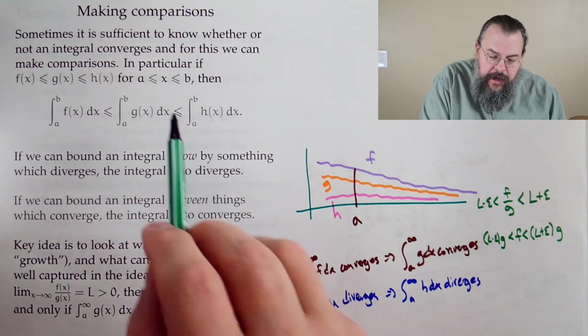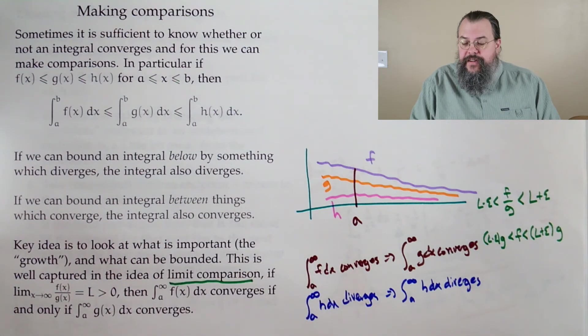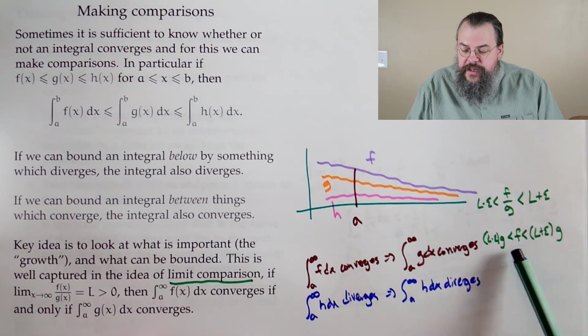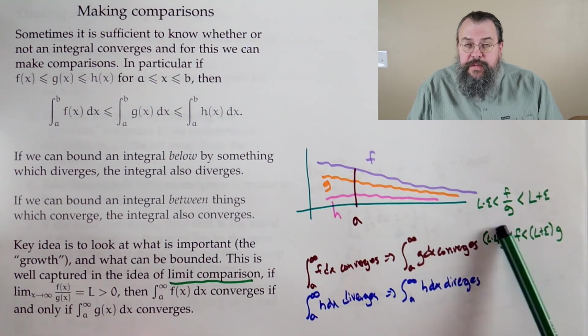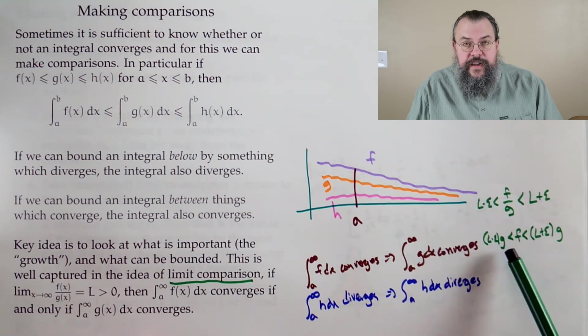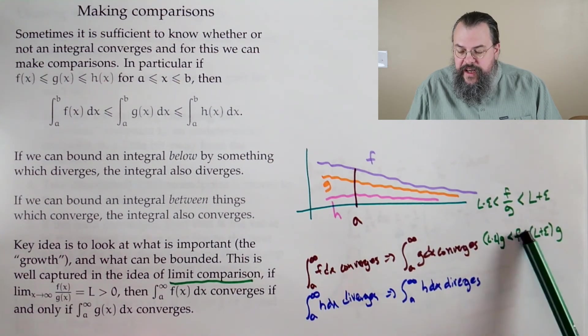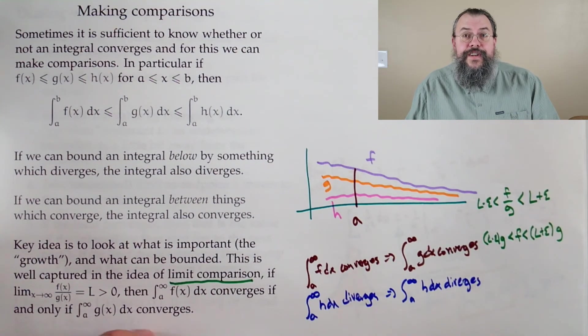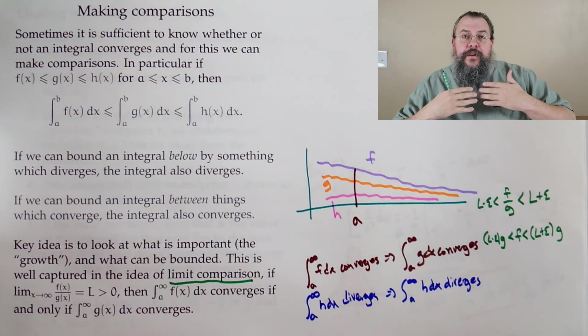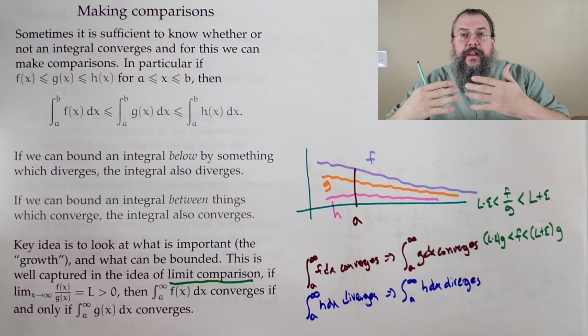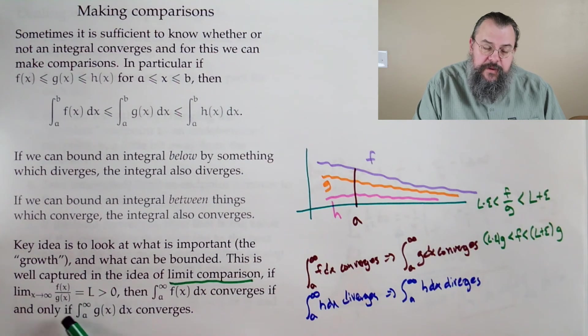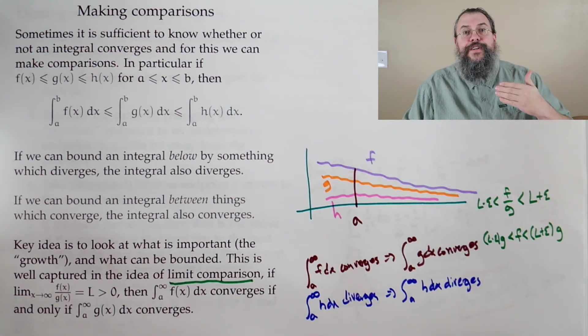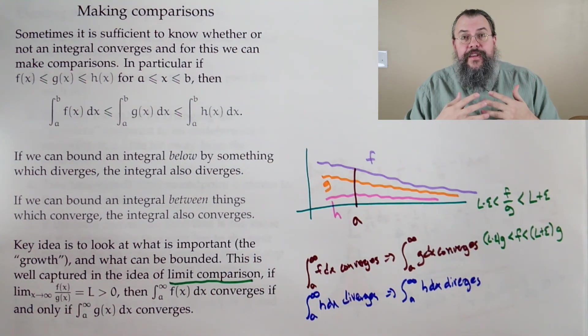Now we say we can pull out our comparison test and say, look, if one of them converges, say f converges, then this smaller piece also converges. It's a constant times g, so g converges. If f diverges, this larger piece, which is a constant times g, also diverges. So when we have that the two functions behave the same - that's what we mean when we say the limit of their ratio goes to l - then they either both converge or both diverge.